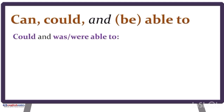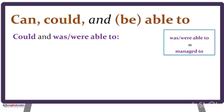Now let's see could and was able to. We use could for general ability. But if you want to say that somebody did something in a specific situation, use was/were able to, or managed to. Don't use could in those cases.